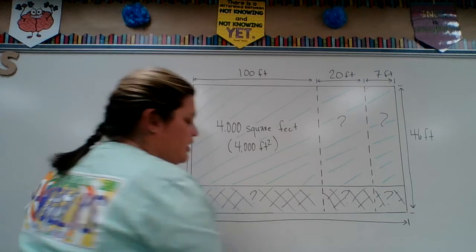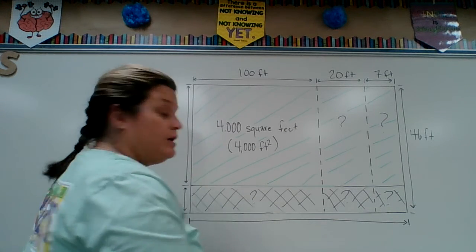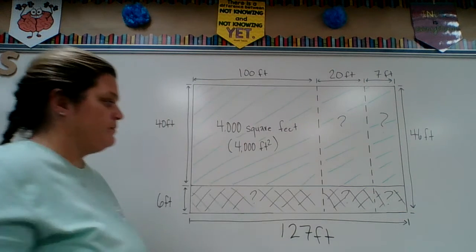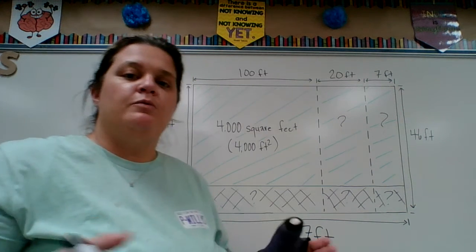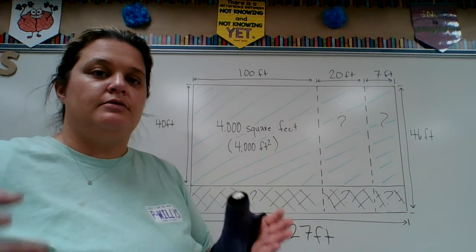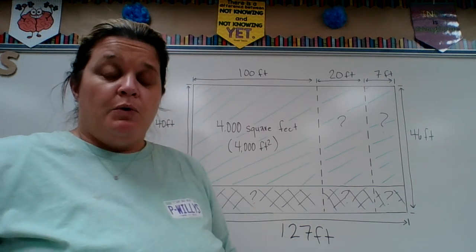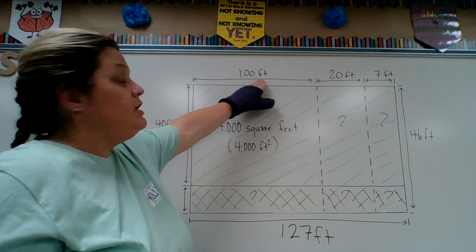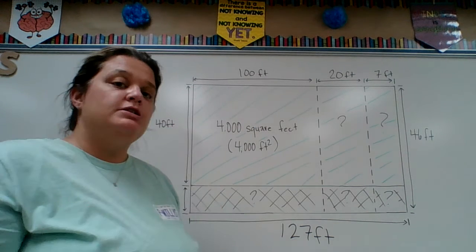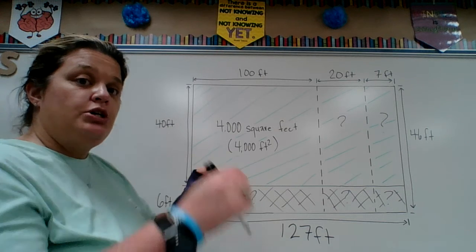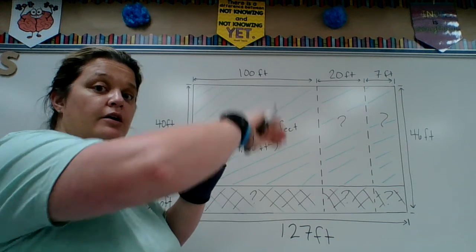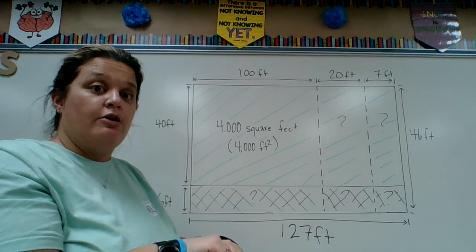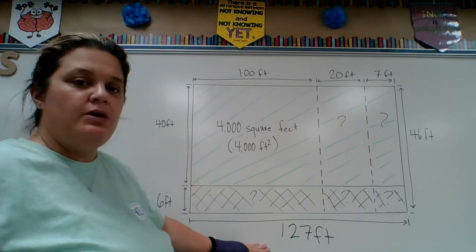Y'all know this is not to scale. The length total is 127 feet. Now some people say, 'Ms. Moore, why don't we put feet cubed since we did three of them?' Here's why you don't. When you add feet, inches, centimeters — any length — when you add them, the unit stays the same. It's only when you multiply, because you're actually putting two things together, like 40 feet times 20 feet, so that's squared. When we add, you don't have to do that.